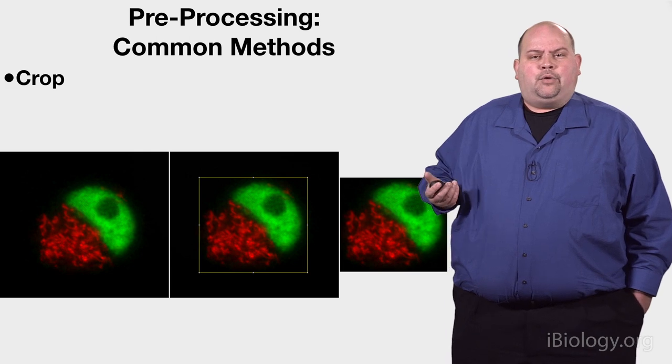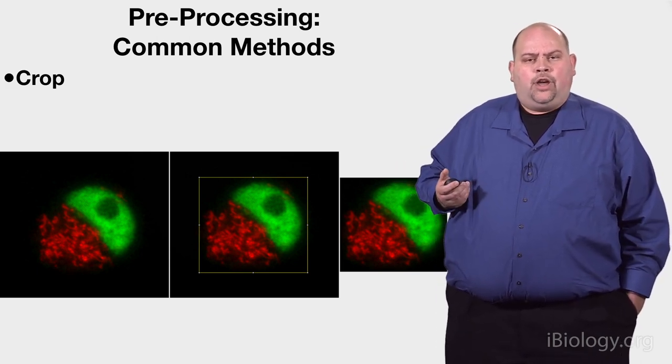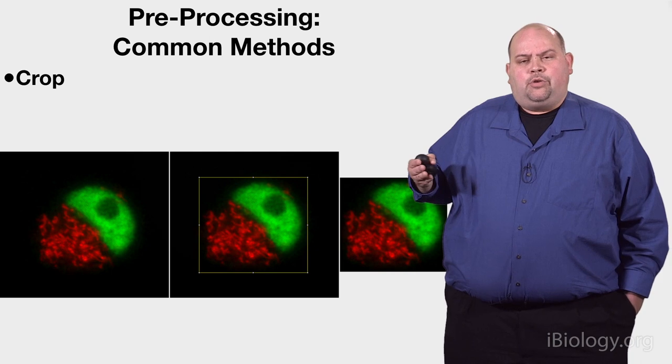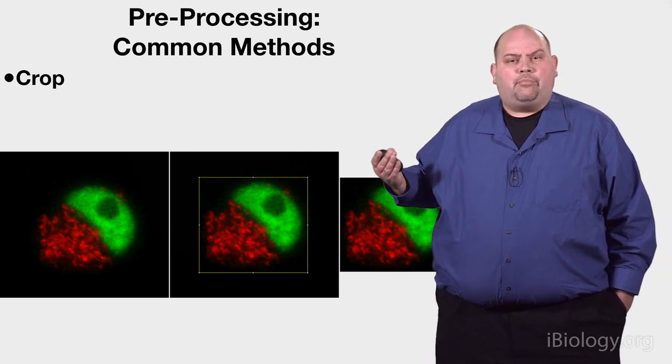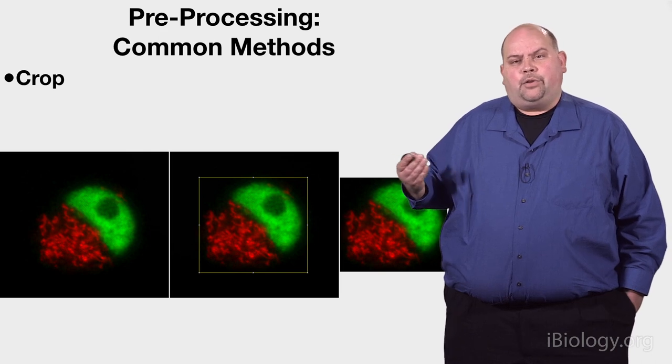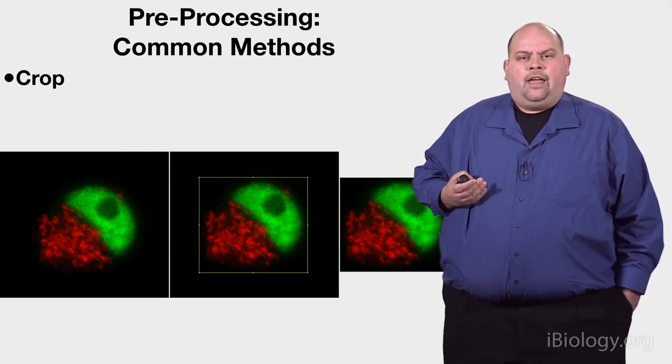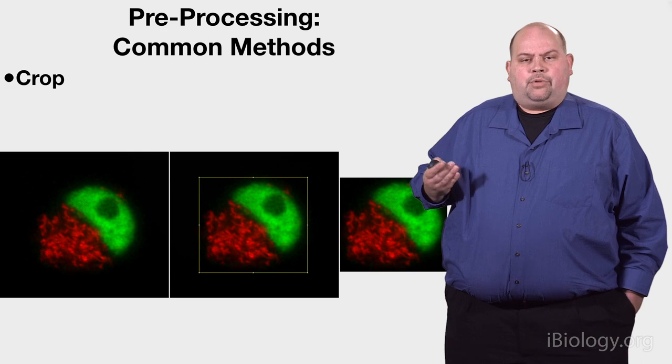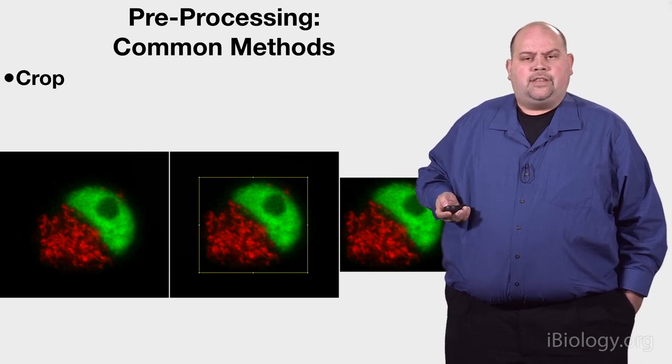And it's very common when you do this for co-localization, as we talk about in other videos, where you just want to see how two things of interest co-localize or are in the same place. And so less background can help in that because otherwise more background could influence certain calculations such as co-localization. And so sometimes you need to reduce the areas without the signal just because it's confusing to the scientist.